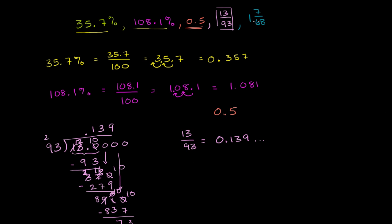Now finally we have 1 and 7 68ths. You could figure out what 7 68ths is as a decimal and add that to 1, or rewrite this as an improper fraction. Let's write it as an improper fraction. 1 and 7 68ths is the same thing as 1 plus 7 over 68, which is the same thing as 68 over 68 plus 7 over 68. 1 is the same thing as 68 over 68. So this is equal to, now that we have a common denominator, 68 plus 7 is 75 over 68.